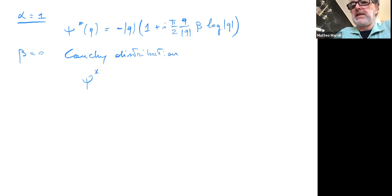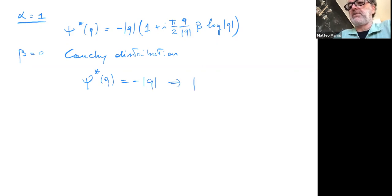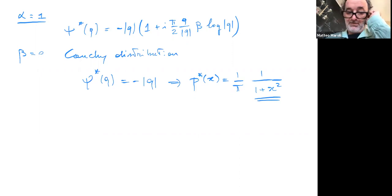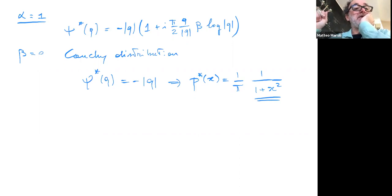When alpha equals one and beta equals zero, we get the Cauchy distribution, with psi-star of q equal to minus the absolute value of q. One can do the Fourier transform and find that p-star of x equals one over pi times one over one plus x-squared. Indeed the behavior of this distribution goes as x to the minus two, consistent with alpha equal to one giving an exponent of alpha plus one equals two.